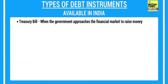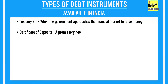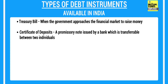The first instrument is called the Treasury Bill, where you're lending to a central bank — in our case, the RBI. The second is called a CD, short for Certificate of Deposit. These are issued by banks, just like a fixed deposit, but unlike fixed deposits — which are non-transferable between individuals — a Certificate of Deposit is transferable.